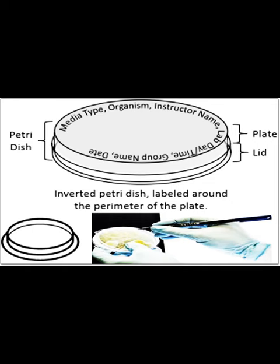To write any microbial information in a Petri dish, first invert the Petri dish, then label the microbial information around the plate perimeter of the Petri dish, such as media type, organism name, instructor name, lab day, group name, and date.